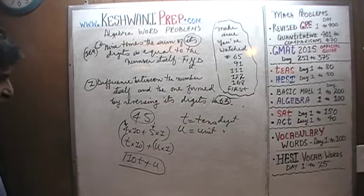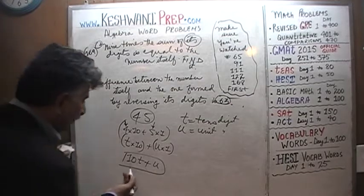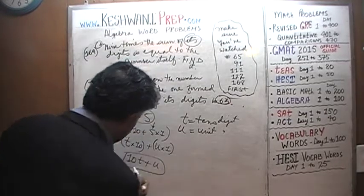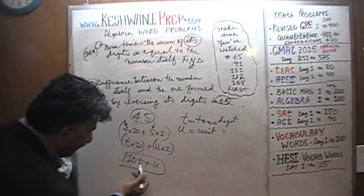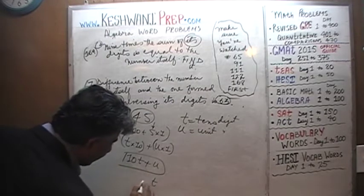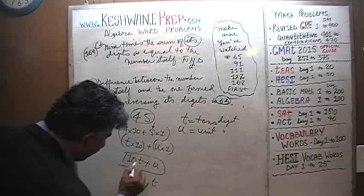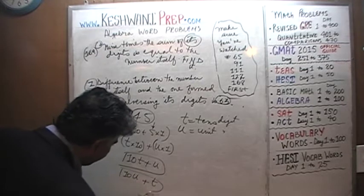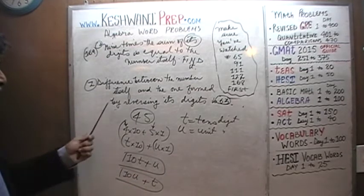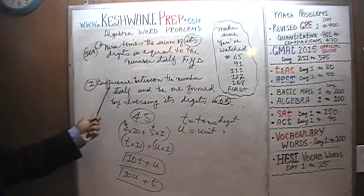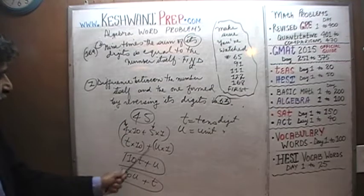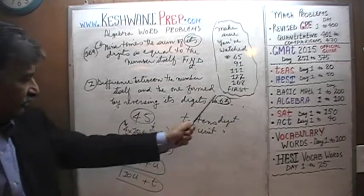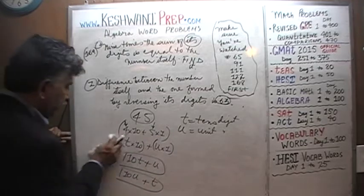Now we are going to reverse the digits. When we reverse the digits, t appears in the units place and u appears in the tens place, so the reversed number becomes 10u plus t. We are told the difference between the original number and the one formed by reversing the digits is 63 — we will make use of that now.